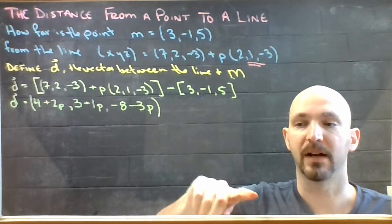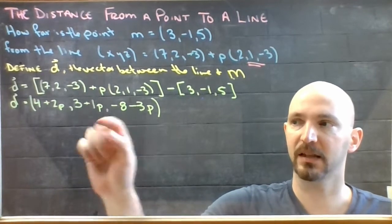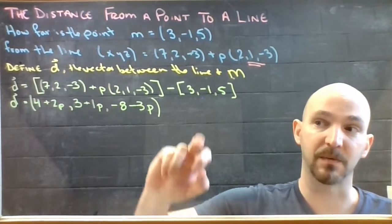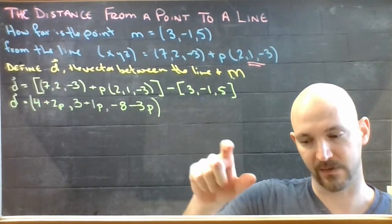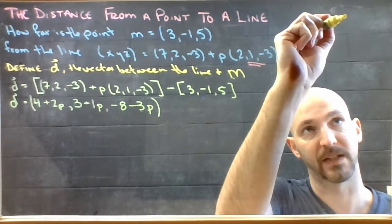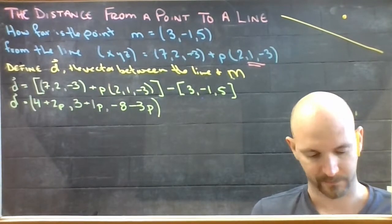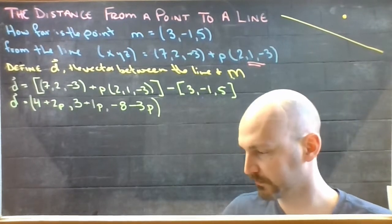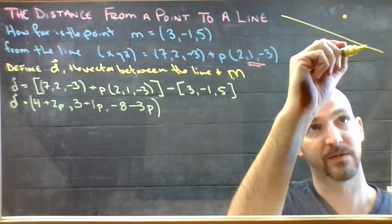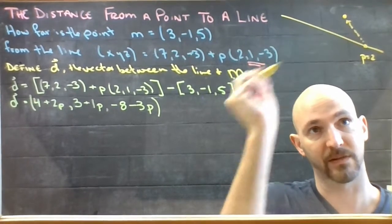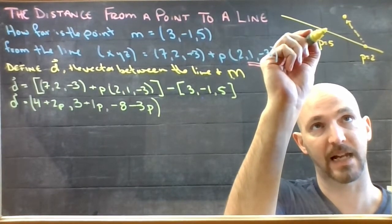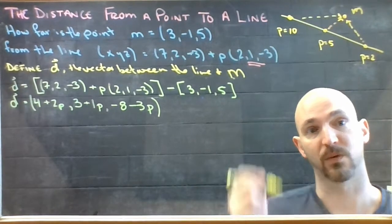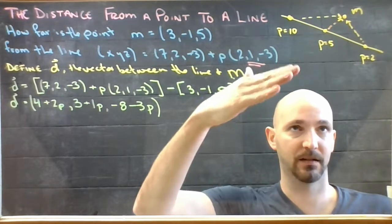What I've got here is if you pick a value for P, that's a location on the line. If I pick any location, say P is 2, well if I put a 2 here, here, and here, then this would be the vector that gets me from that spot to point M. So if P is 2, say you're here when P is 2, then that's what D is giving you. And if P is 10, then that's what it's giving you. They're all pointing towards M.